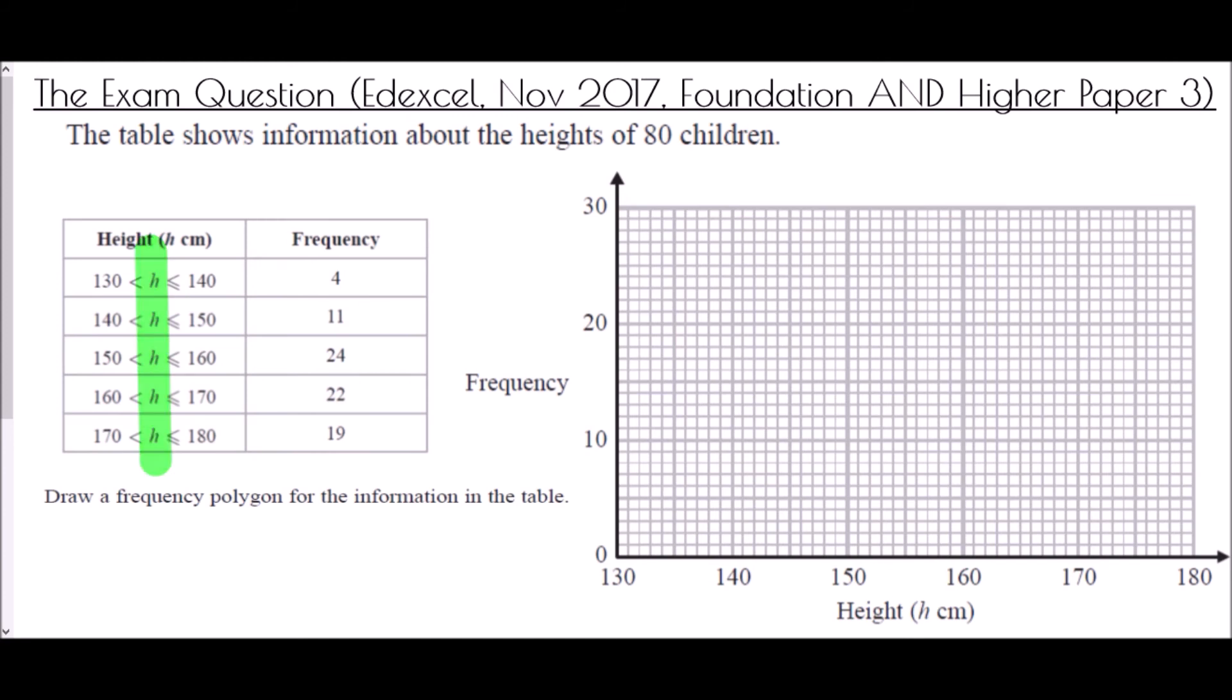And so the key thing here is again we need to be thinking about midpoints. So we want the middle of each of these groups for us to plot our values. So the midpoint between 130 and 140, well that's going to be 135, and then 145, 155, 165, and 175. And all we're going to do is we're going to plot the frequencies at each of these heights.